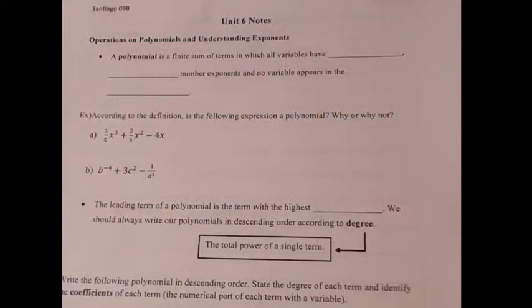We're going to start by looking at operations on polynomials: identifying what a polynomial is, parts of a polynomial, how to describe them in terms of the number of terms and degree. That should run quickly, and we should have time to look at combining like terms by distributing a positive or negative. Let's take a look — operations on polynomials and understanding exponents.